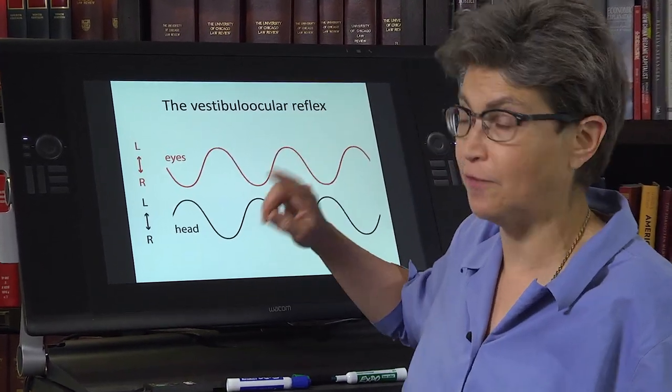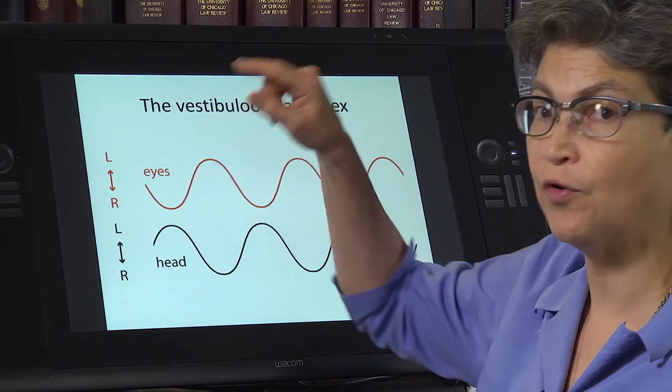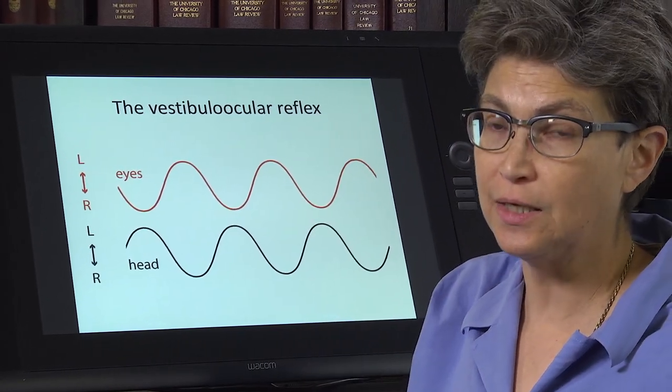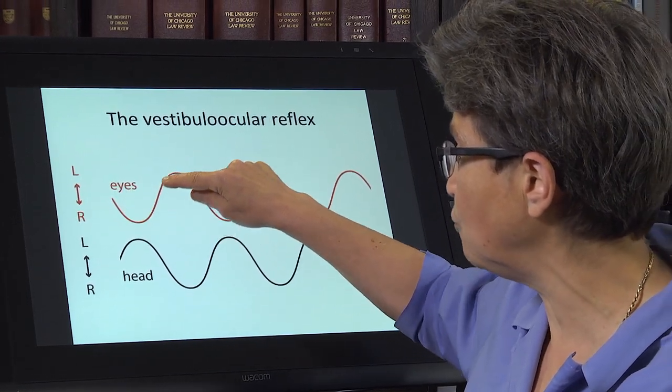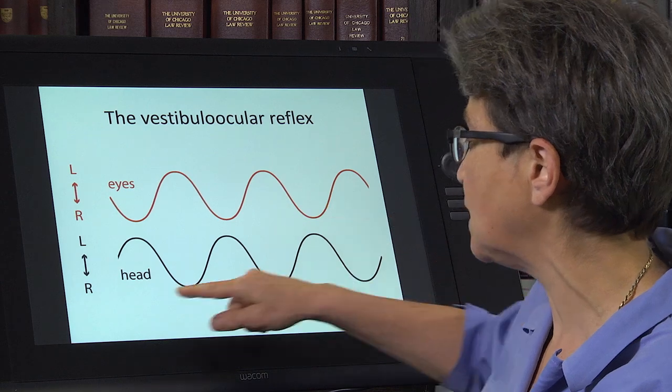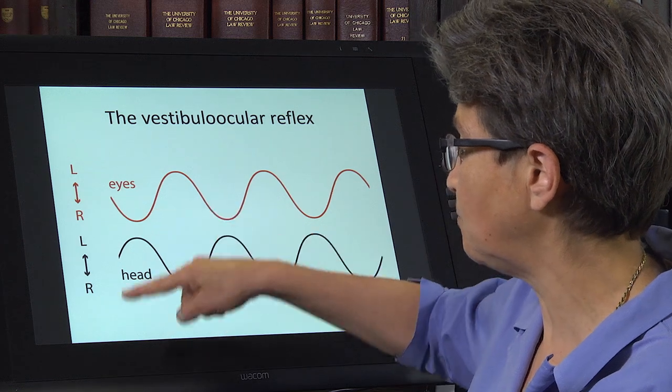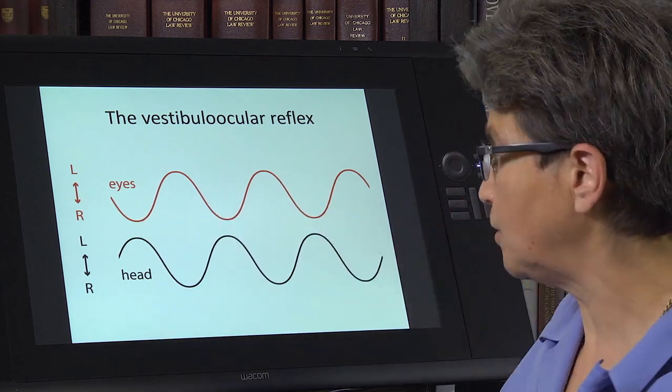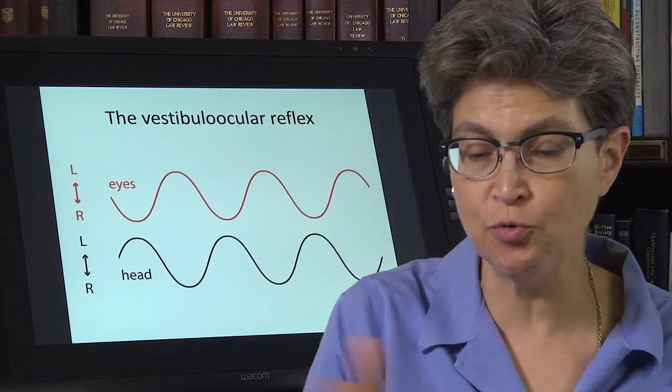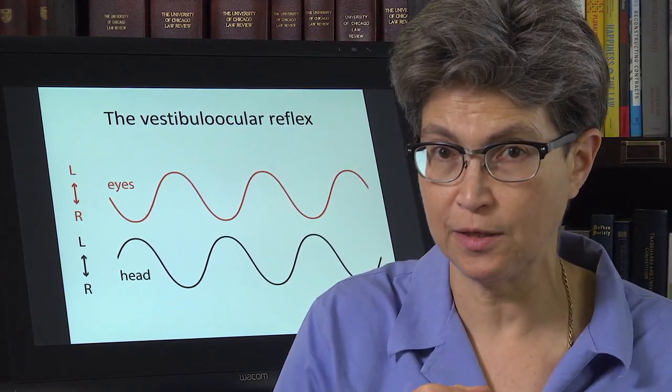So that's why we use the vestibular system to guide our eye movements in response to head movements. Now let's see how the VOR works. So first of all, the outcome of the VOR is that the eyes are going to move in opposition to the head to keep, so the effect of moving the eyes opposite to how the head moves is that gaze will stay steady.